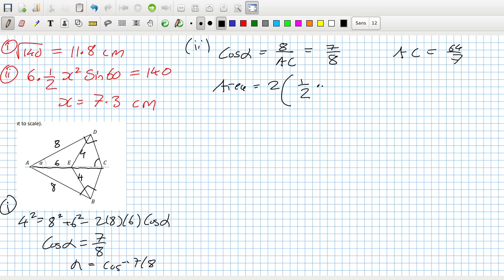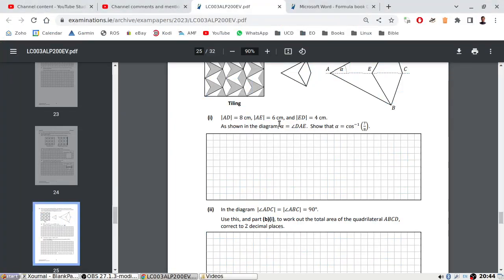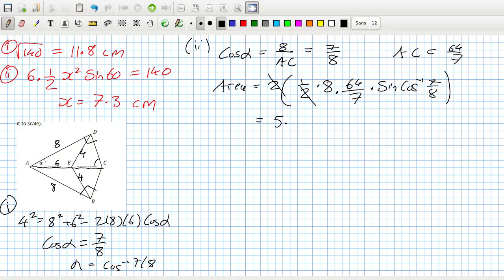A half a b sine cos inverse 7 over 8. So those twos cancel, so 64 times 8 divided by 7 times sine cos inverse 7 over 8. So two decimal places, 5.06 centimeters squared.